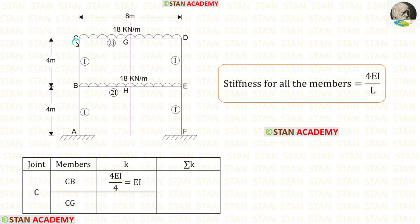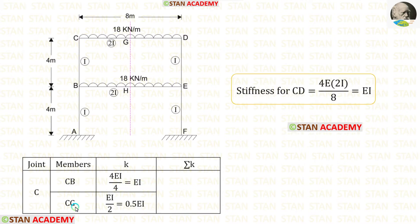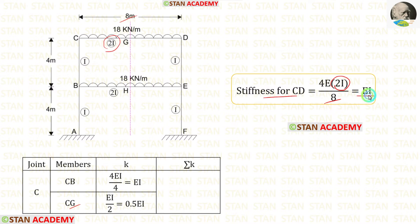First, let us find the stiffness values at joint C. For member CB, the length is 4 meters, giving a stiffness of EI. Before finding the stiffness of CG, we first calculate the stiffness for CD. The length of CD is 8 meters, and the moment of inertia for CD is 2I, so in the formula we apply 2I instead of I. After calculation, we get a stiffness of EI for CD. To find the stiffness of CG, we divide the stiffness of CD by 2, giving 0.5EI.